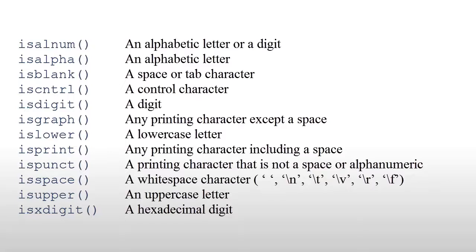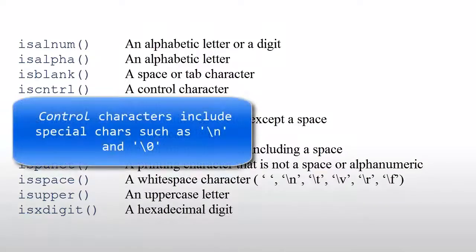isAlNum tests the character to see if it's an alphabetic letter or a digit, that is a number. isAlpha tests for an alphabetic letter. isBlank tests for a space or a tab character. isCNTRL tests for a control character.